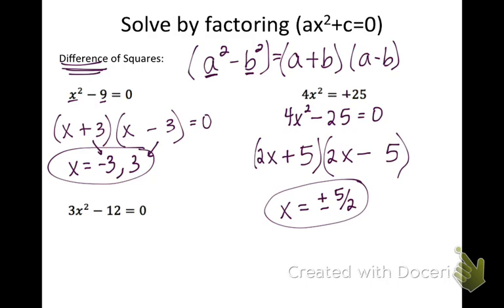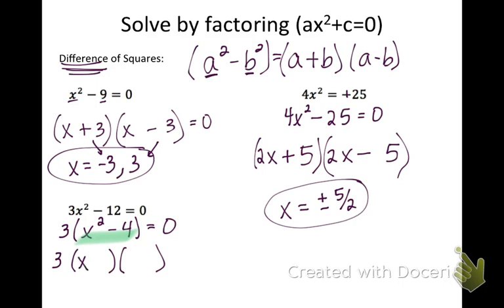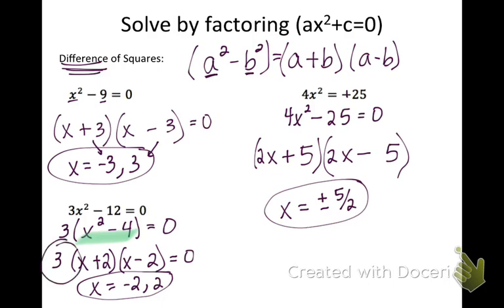For the last one: three x squared minus twelve. We don't have any perfect squares here, so look for a GCF — we can pull a common factor of three out. Now factor the inside part, this difference of squares, leaving the three on the outside. The square root of x squared is x, the square root of four is two, with a plus and a minus. Setting x plus two equal to zero gives x equals negative two, and x minus two gives x equals positive two. Notice I don't need to set the three equal to zero, because three will never equal zero.